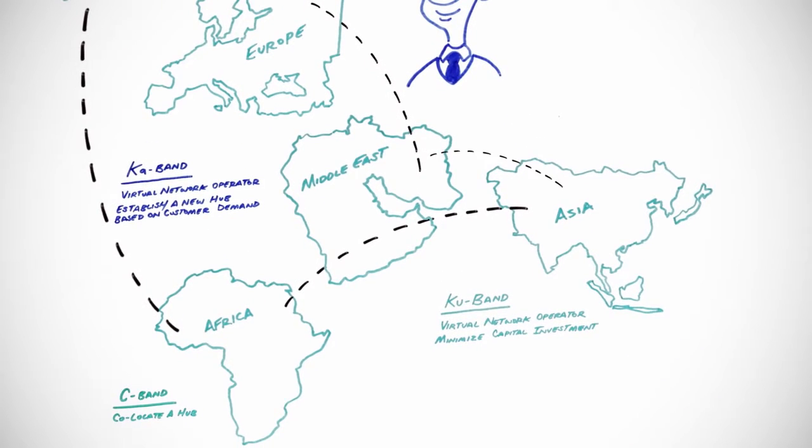Over in Asia, you're ready for that stage. A high throughput KU band satellite is now live and you co-locate a hub in the satellite operator's teleport.